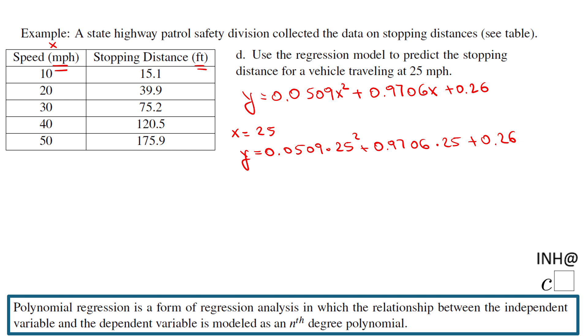So we're going to get y equals 0.0509 times 25 square plus 0.9706 times 25 plus 0.26. Depends on your calculator. You may have a TI-83, 84, or better, or just a simple TI-30xs. I have one like this. You just put in the calculator exactly like this and you end up with an answer. I end up with this answer: y equals 56.3375, and these are feet.